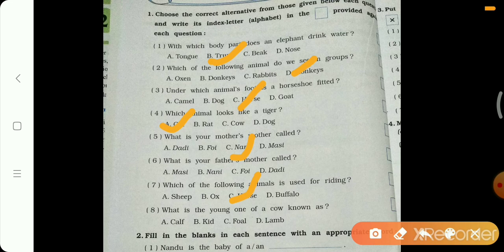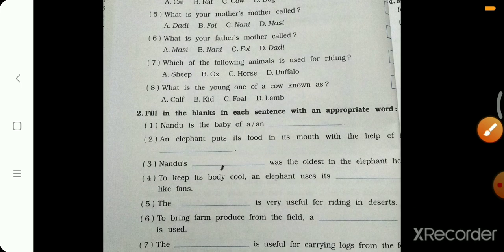What is the young one of a cow known as? Cow ke young one ko kya bolte hain? Calf, kid, foal, lamb. You know that animals, young one have different name. Alag alag naam hote hain? To answer is calf. Kid kiska baby hai? Horse. Horse baby.